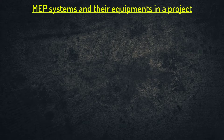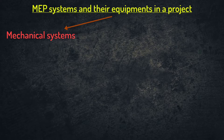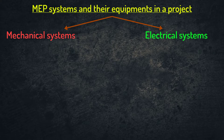MEP systems will be divided into three categories. The first category is the mechanical systems and their equipment. The second category is the electrical systems and their equipment. And the third category is low current systems.